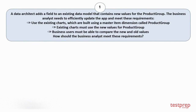Question number 1. A data architect adds a field to an existing data model that contains new values for the product group. The business analyst needs to efficiently update the app and meet these requirements: 1. Use the existing charts, which are built using a master item dimension called product group. 2. Existing charts must use the new values for product group. 3. Business users must be able to compare the new and old values. How should the business analyst meet these requirements?